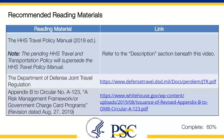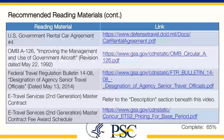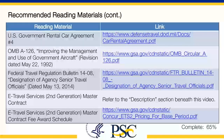Additional recommended reading includes: Appendix B to Circular No. A-123, Risk Management Framework and/or Government Charge Card Programs, revision dated August 27, 2019. Further recommended reading materials include: U.S. Government Rental Car Agreement No. 4; OMB A-126, Improving the Management and Use of Government Aircraft, revision dated May 22, 1992; Federal Travel Regulation Bulletin 14-08, Designation of Agency Senior Travel Officials, dated May 13, 2014; E-Travel Services 2nd Generation Master Contract; and E-Travel Services 2nd Generation Master Contract Fee Award Schedule.